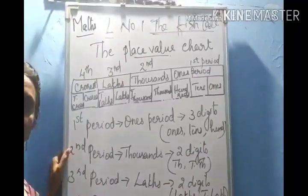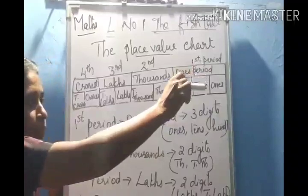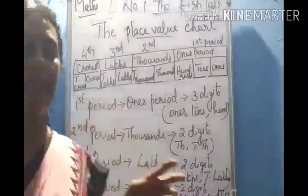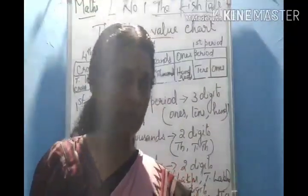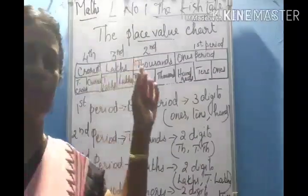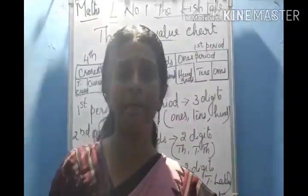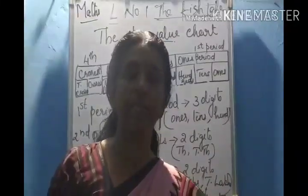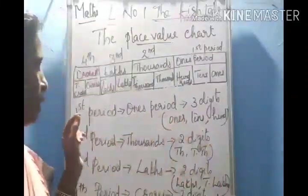Today I am going to explain the place value chart. I know you have all learned about the place value chart in the lower classes. But if you learn it very clearly, it will help you to read and write the numbers, even the bigger numbers — 6-digit or 7-digit numbers — very easily, if you know the place value chart.